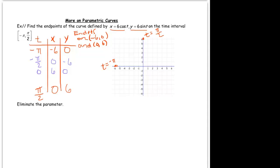And 6 times sine of 0 is 0. So let's put those points in. We get 0, negative 6, that's t equal to negative pi over 2. And when t equals 0, we get 6, 0. So this particle started here at negative 6, 0, ended at 0, 6, and had to have hit all those other points on the way.